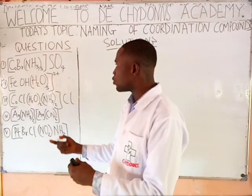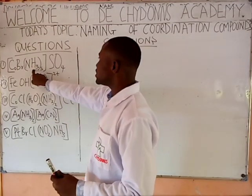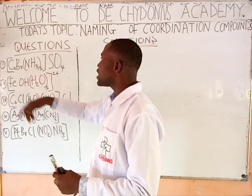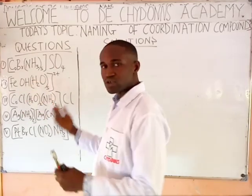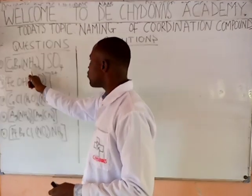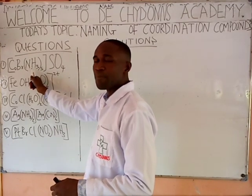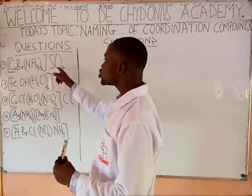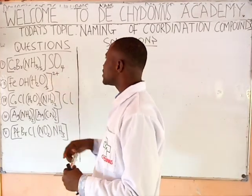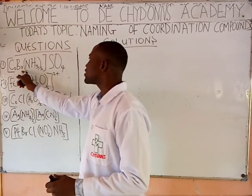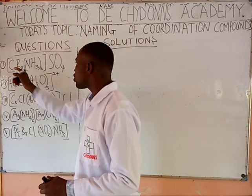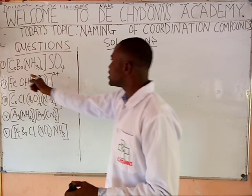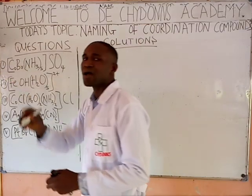Then, this is one of the neutral molecules — we have ammonia. Ammonia, water, and so on are neutral molecules. Ammonia, whenever you see it in the complex ion, you call it amine. Then this is sulfate. Before you name a particular coordination compound or complex ion, what you do is get the oxidation number of the metal atom.